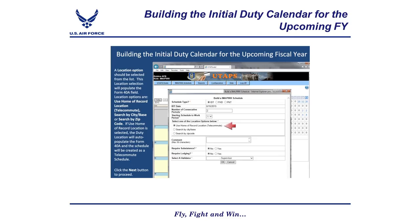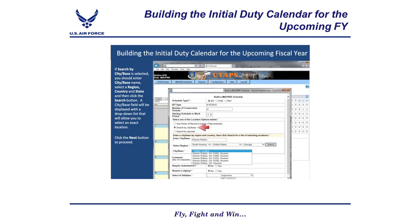A location option should be selected from the list, as this selection will populate the Form 40A field. Location options are: use home of record location, telecommute, search by city/base, or search by zip code. If 'use home of record location' is selected, the duty location will auto-populate the Form 40A and the schedule will be created as a telecommute schedule. If 'search by city/base' is selected, you should enter the city or base name, select a region, country, and state, then click the search button. A city/base field will be displayed with a drop-down list that will allow you to select an exact location.